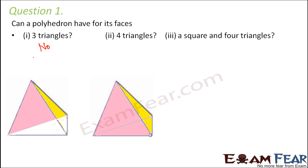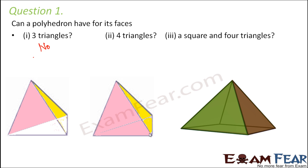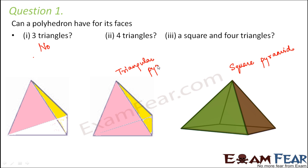When you have the base as a triangle, that completes the structure of a polyhedron. A square and four triangles is also possible — with this you can make a square pyramid, because the square will form the base and the four triangles form the four side faces. So in the second case you form a triangular pyramid, in the third case a square pyramid, and in the first case you only form a partial pyramid where the base is absent.